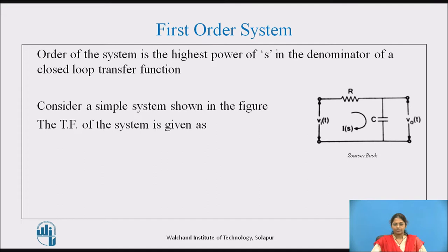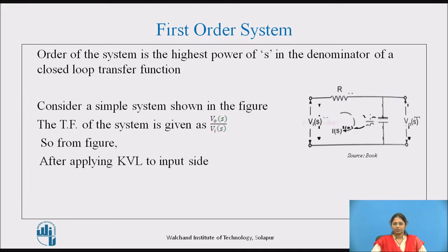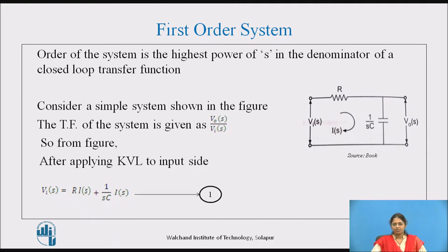The transfer function of any system is given as the Laplace transform of the output to the Laplace transform of the input. Here we are trying to find the transfer function of the first-order system. To find the same, we need to find the Laplace transform of the output and input. From the figure, after applying KVL to the input side, we get Vi(s) = R·i(s) + (1/sC)·i(s). This is equation 1.